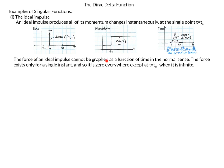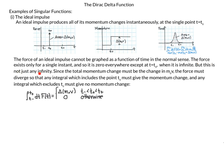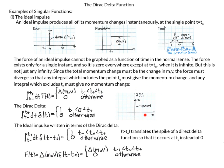The force of an ideal impulse cannot be graphed as a function of time in the normal sense. The force exists only for a single instant — it's zero everywhere except at T equals T0, where it is infinite. Since the total momentum change must equal delta(M0 V), any integral which includes T0 gives the momentum change, and any integral which excludes T0 gives zero.